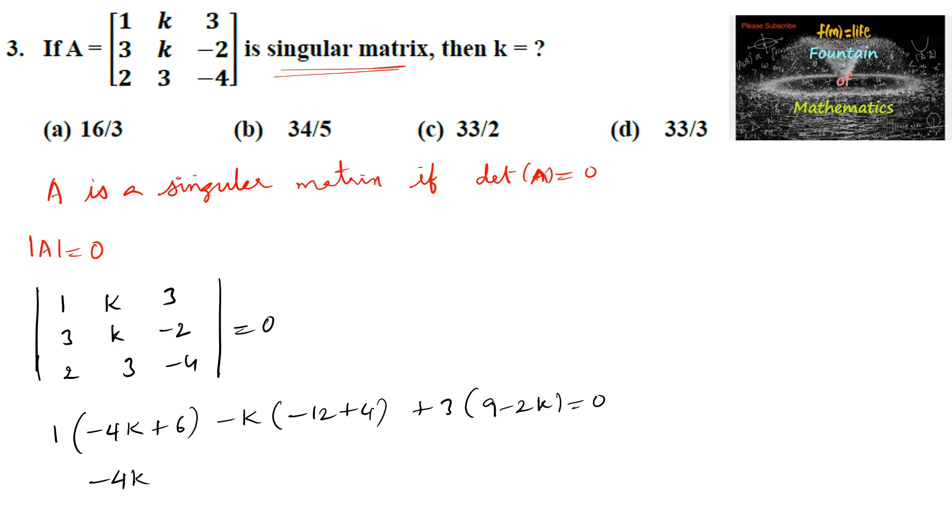simplifying: -4k + 6 plus 12k - 4k and again plus, 3 times 9 is 27 minus 6k equals 0. So -4k plus 12k is 8k, 8k minus 4k is 4k